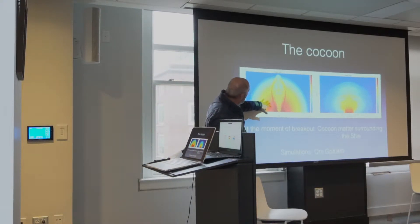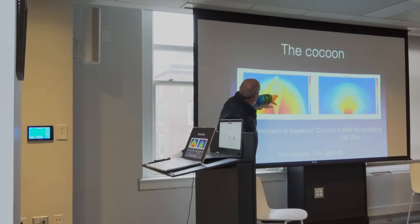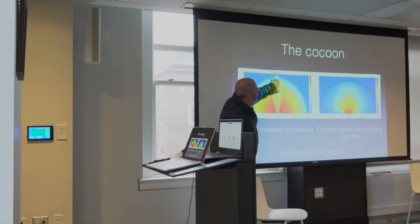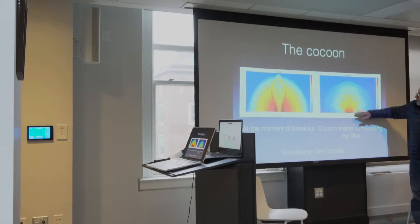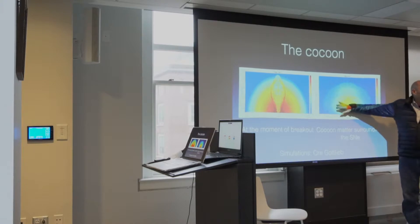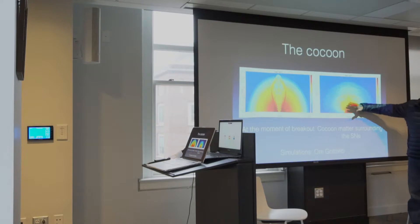What you see here is a simulation of such an event. The jet propagated basically up to here and died out. We see the moment that the cocoon breaks out — the cocoon by itself is hot enough and it breaks out from the star. At a much larger scale, the material from the cocoon spreads almost spherically around the whole supernova, and this is the hot material that we see.